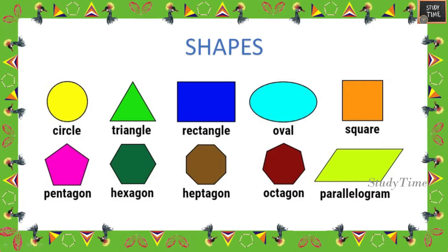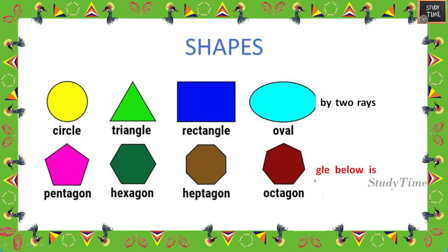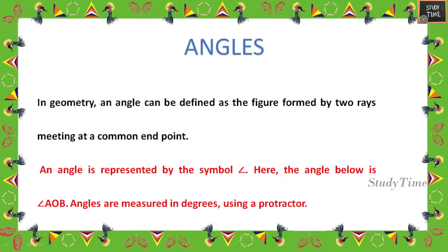You all know that the basic shapes are: circle, triangle, rectangle, oval, square, pentagon, hexagon, heptagon, octagon, and parallelogram. These are the basic shapes.